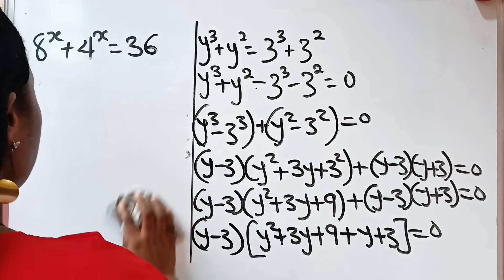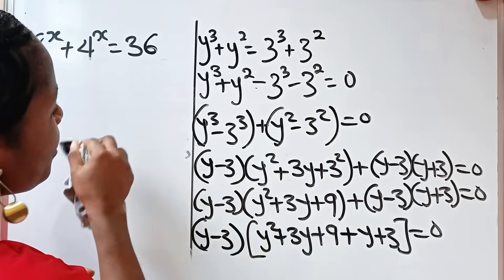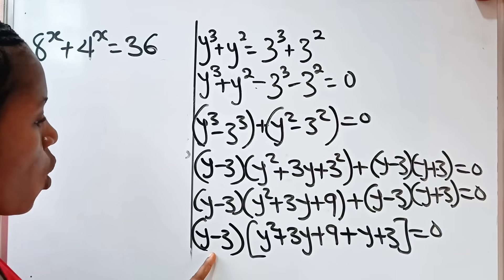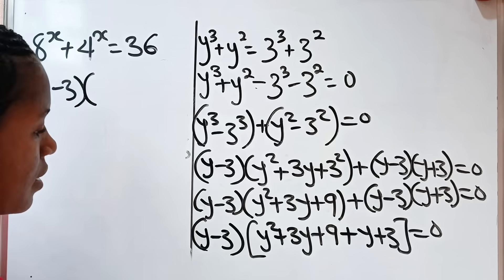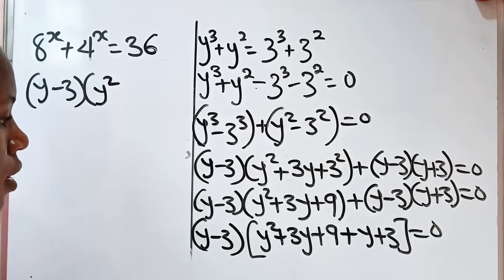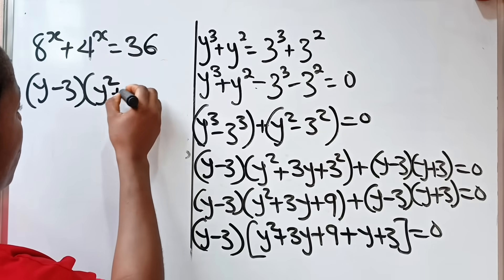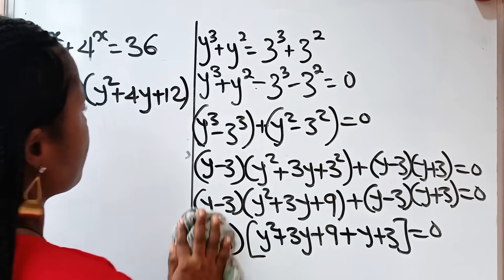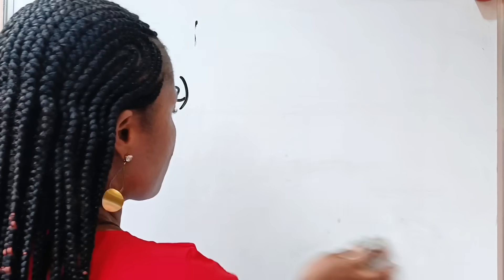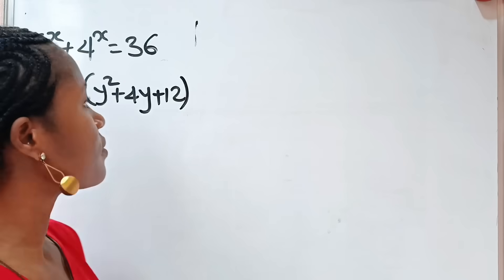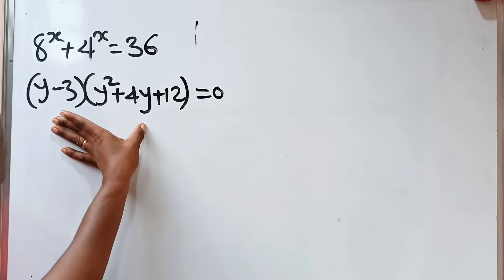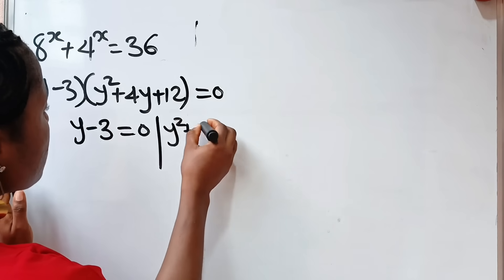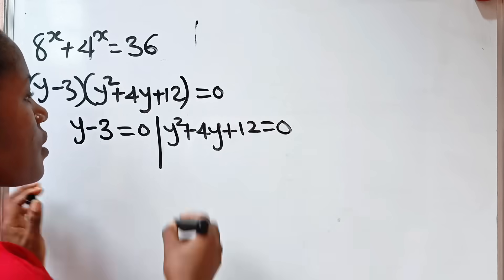Please click the subscription button and turn on your notification bell if this is the first time you are coming across this channel. Give us a thumbs up if you are enjoying this video. So we have (y minus 3) brackets (y squared plus 4y plus 12) is equal to 0. This simply means that y minus 3 is equal to 0, or y squared plus 4y plus 12 is equal to 0 as well.